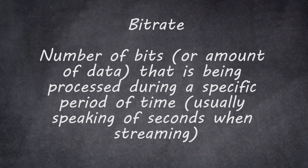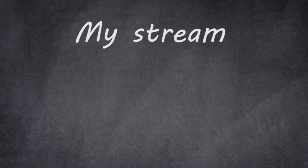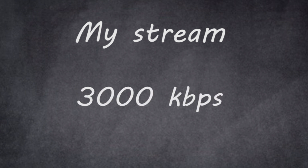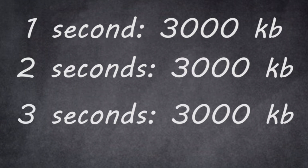In case you don't know what bit rate is, how it works, or what it does, let me explain. Bit rate is the number of bits — or as I like to think of it, the amount of data — that is being processed during a specific period of time, usually speaking in seconds when we're talking about streaming. For example, I keep my bit rate at 3,000 kilobits per second, meaning my PC is pushing out 3,000 kilobits of data every second.